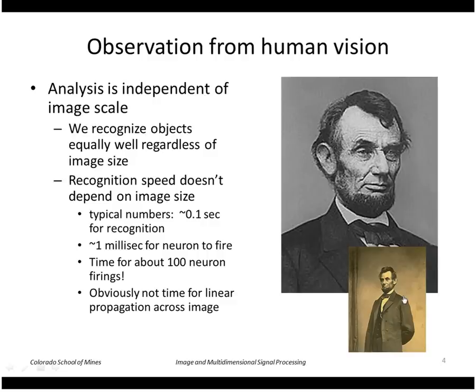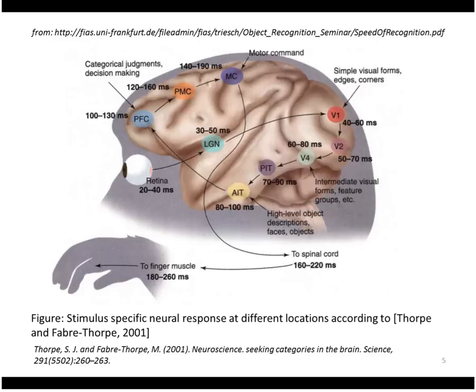So obviously we're not doing linear type propagation across the image. And it's just a rough number as to what we're doing is that the neurons in our brain are fairly slow. They take about one millisecond for a neuron to fire. So if we can recognize an object in about a tenth of a second, that's about a hundred neuron firings. So obviously we're doing this processing in parallel across different scales.